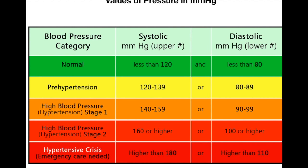The pressure values are: in normal condition, systolic is less than 120 mmHg and diastolic is less than 80 mmHg.